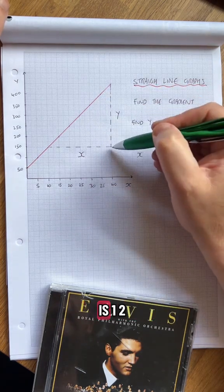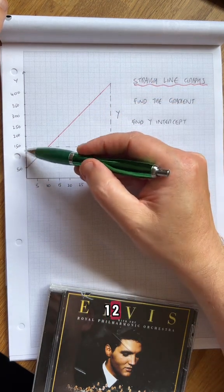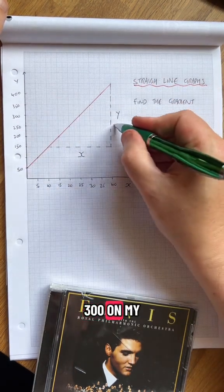So the length of this line is 1, 2, 3, 4, 5, 6 squares. That's 300 on my scale, so I'm going to do 300.